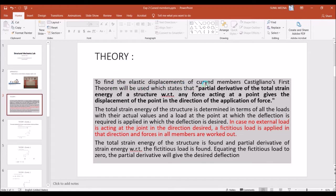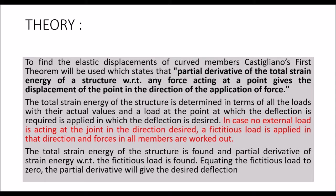To find the elastic displacement of curved members, Castigliano's first theorem will be used. Theoretically, we determine the displacement of curved members using Castigliano's first theorem. This theorem states that the partial derivative of the total strain energy of a structure with respect to any force acting at a point gives the displacement of the point in the direction of the application of force.